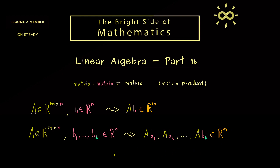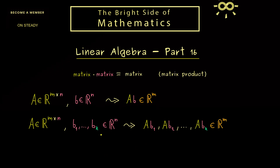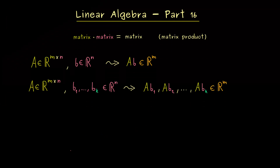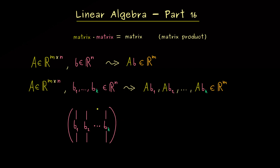Now this means we can easily formulate this with an additional matrix. In other words, let's simply put the vectors B1 to Bk into the columns of a matrix. Hence, what we get here is a matrix with exactly n rows and k columns. Therefore it is an element in the set R to the power n times k. And now it is simply possible to apply the matrix A from the left-hand side here, and we could read and define this as a multiplication.